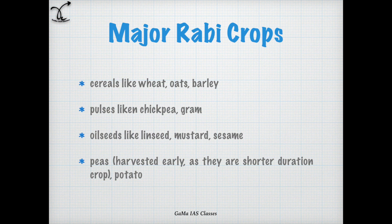Major crops of the Rabi season are cereals like wheat, oats, and barley; pulses like chickpea and gram; oil seeds like linseed and mustard; and also sesame, peas, and potato.